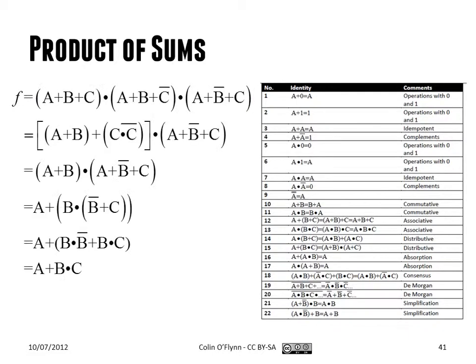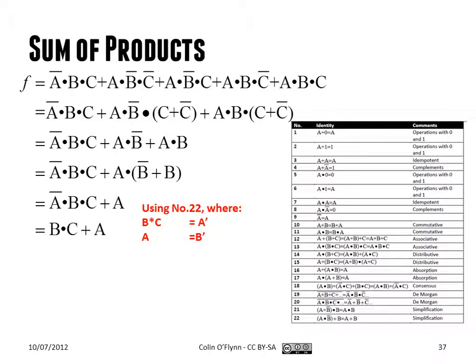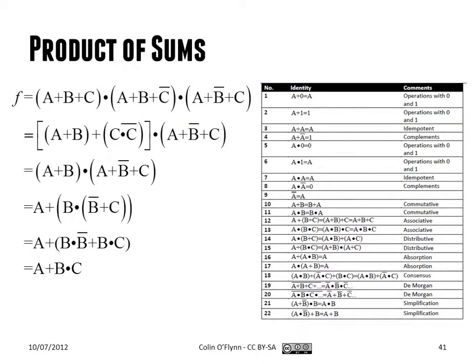Once we have a product of sums or a sum of products form, we can basically use all of the Boolean algebra we've been using up until now and reduce it down. Whichever one you use, here I've shown the same truth table and sum of products and product of sum form. The result should always be the same logic realization. For example, we have B and C ORed with A, and here we have A ORed with B and C.